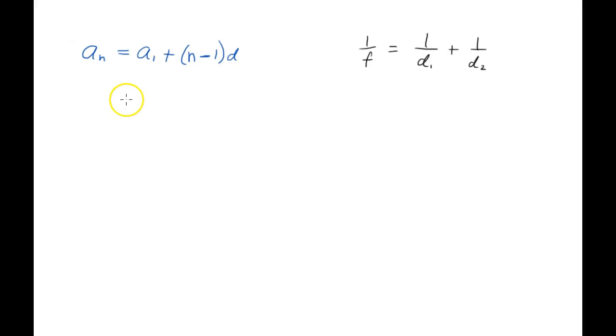In this video we'll walk through a couple of examples of solving for a letter. So in the first equation we have a sub n equals a sub 1, those can be treated as two different variables, plus the quantity n minus 1 times d. Let's solve for this variable d.